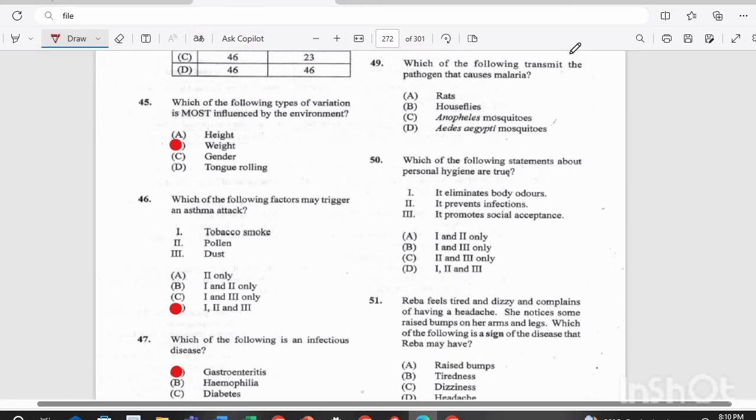Question 49. Which of the following transmit the pathogen that causes malaria? Is it A, rats, B, houseflies, C, the anopheles mosquitoes, or D, the Aedes aegypti mosquito? The answer there is C, the anopheles mosquito. The anopheles mosquito transmit malaria and elephantiasis, but the Aedes aegypti mosquito is what transmits dengue fever.